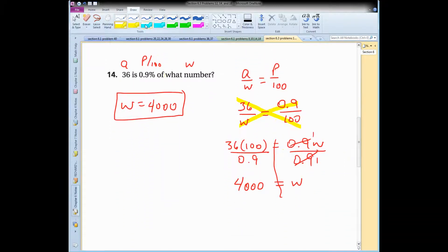All right, for this one, I label the part, the percent, and the whole. There's my formula. This one I use the cross products property because W, the whole, which is what I'm looking for, is in the denominator.